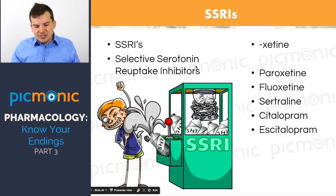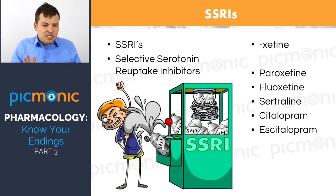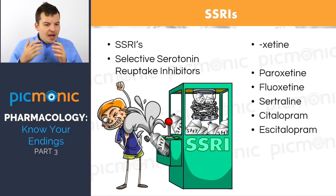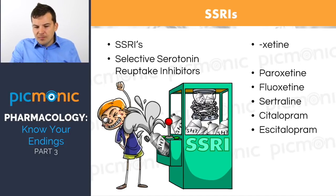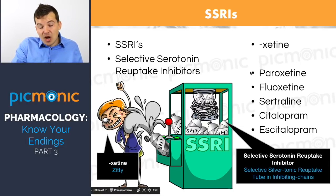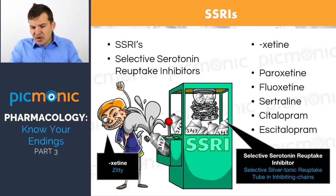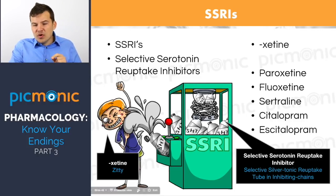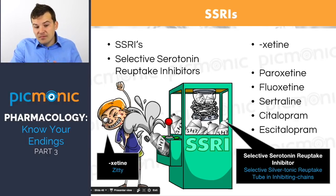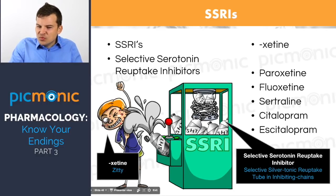Now let's get into some psych medications. The first are SSRIs — selective serotonin reuptake inhibitors. A lot of them end in -etine: paroxetine, fluoxetine. Paroxetine and fluoxetine are the classic ones you see very often. Then we have sertraline, citalopram, escitalopram — different SSRIs. It's important to know them, but it's really important to remember key facts about SSRIs using our Picmonic characters.